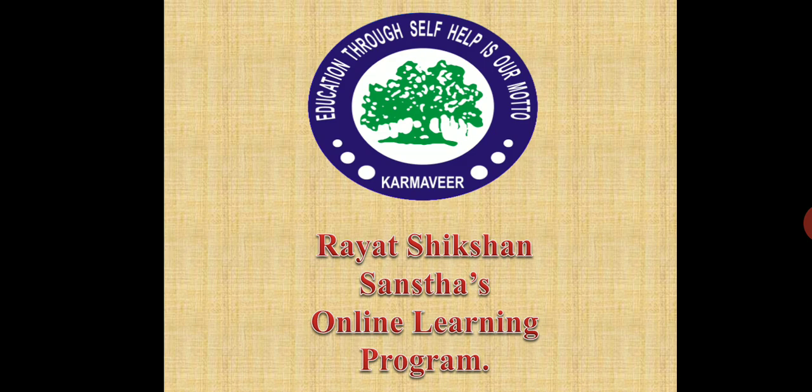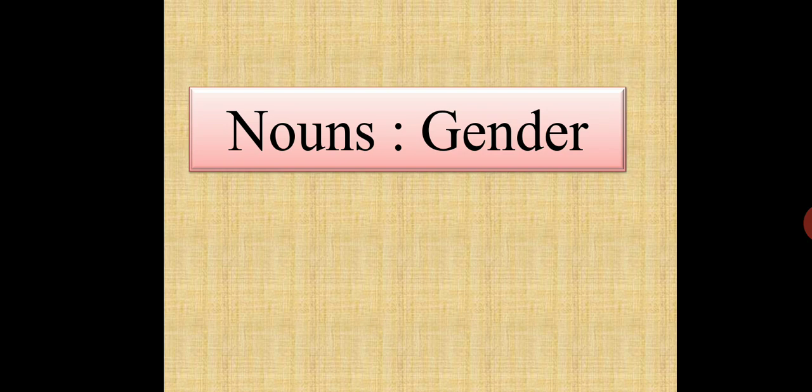What is meant by nouns? Nouns are the names of person, place, animal and thing. Now let us learn more about nouns. Nouns are classified according to gender. So today we are going to learn about gender and its types.